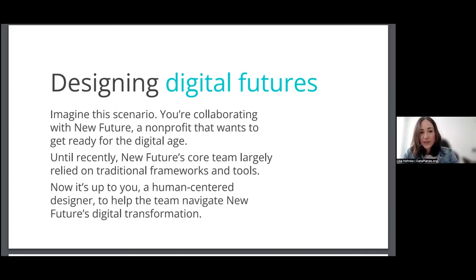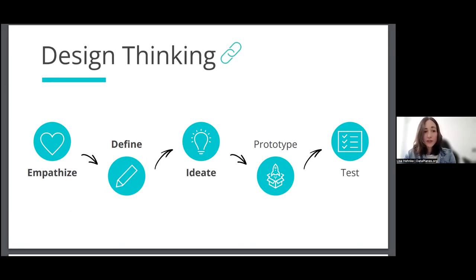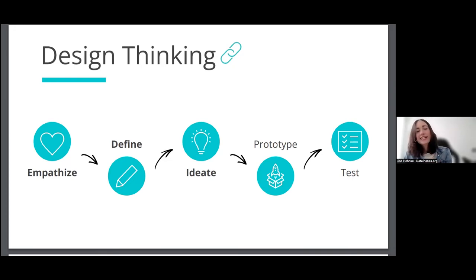As we established, this is a wicked problem — it's not really clear when the transformation is successful or when it's over. What we can do is apply design thinking. We'll go through the first three steps: empathizing with people, defining the problem — because 'helping them navigate digital transformation' is too broad to ideate solutions — and then breaking it into manageable chunks so we can ideate solutions.